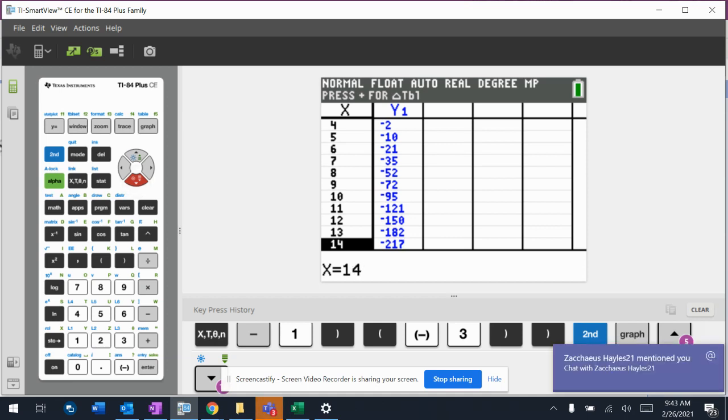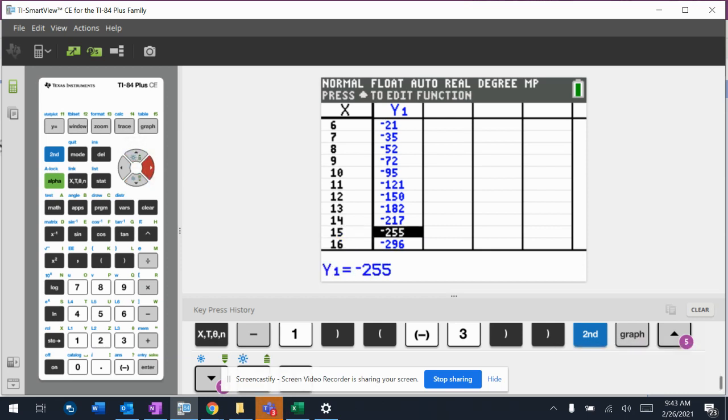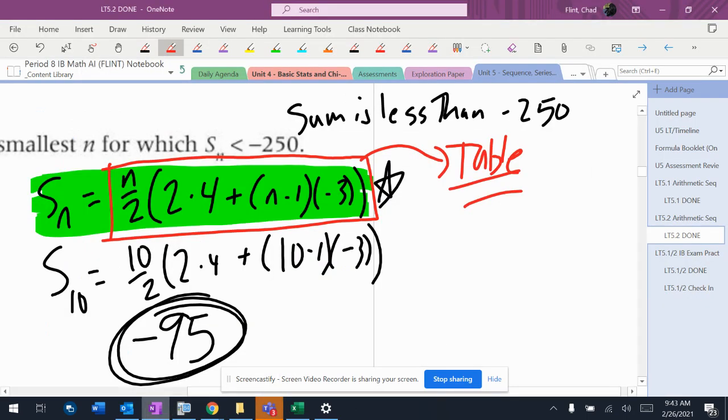So how many terms can I add together until I get to more than 250? So 14 terms is negative 217, no big deal. 15 terms is negative 250, negative 255. That's too much. That means that I cannot have 15 terms. All right? So I can have 14 terms.